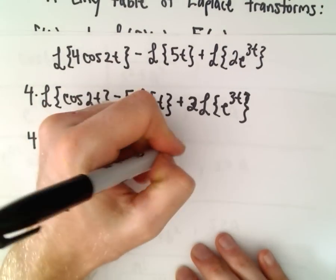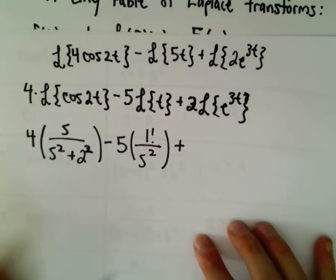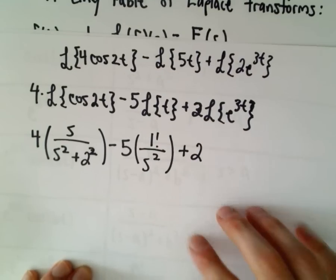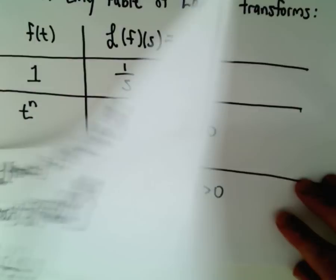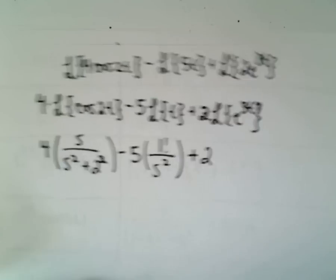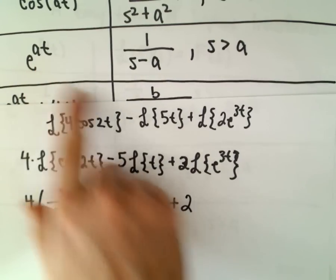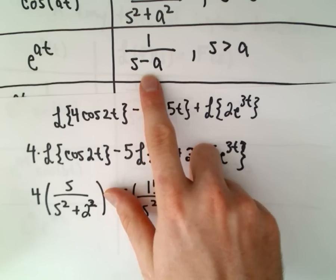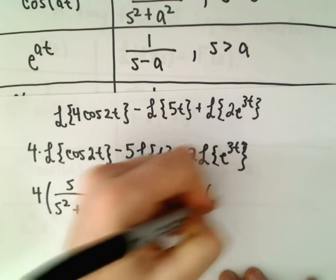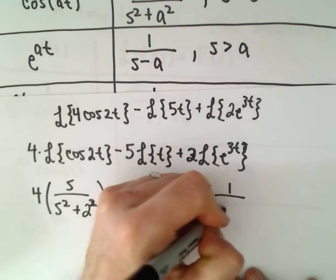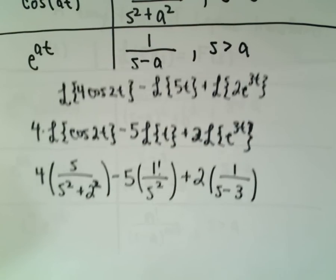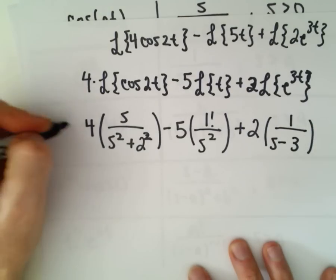Last but not least, if we take the Laplace transform of e to the 3t, we said if you have e to the at you get 1 over s minus the a value. So in this case we'll get 1 over s minus 3. And now this is our Laplace transform, you found it at this point.